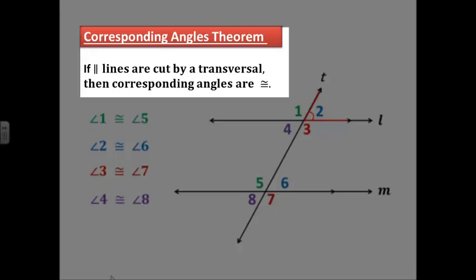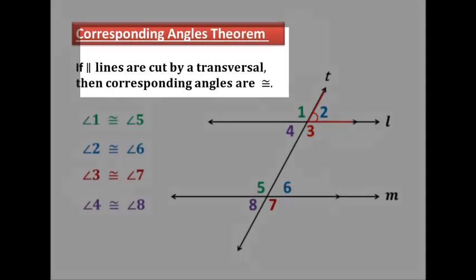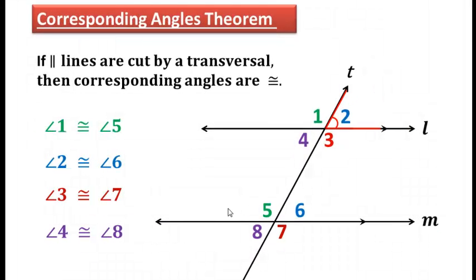If parallel lines are cut by a transversal, then corresponding angles are congruent. So in this diagram here, angle 1 and angle 5 are corresponding angles. If lines are parallel, they are always congruent. Angle 2 and angle 6 are also corresponding angles.